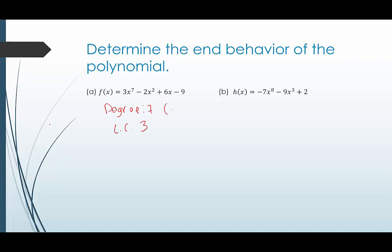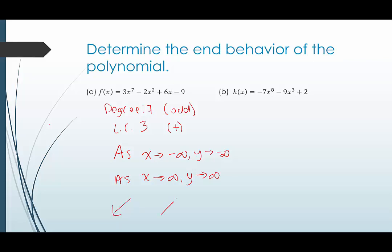This is an odd degree, and the leading coefficient is positive. An odd degree with a positive leading coefficient means that as x goes to negative infinity, y also goes to negative infinity. And as x goes to positive infinity, y also goes to positive infinity. So we predict the graph goes down on the left and up on the right, with things happening in between.